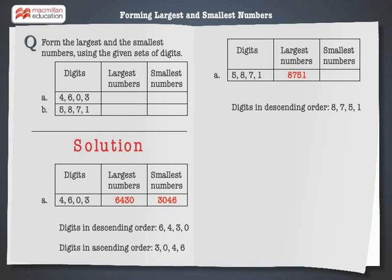Now to form the smallest number, first arrange the given digits in ascending order, that is 1, 5, 7 and 8. Hence the smallest number that can be formed using the digits 5, 8, 7 and 1 is 1578.